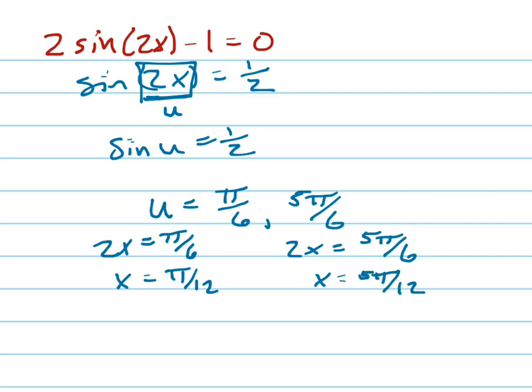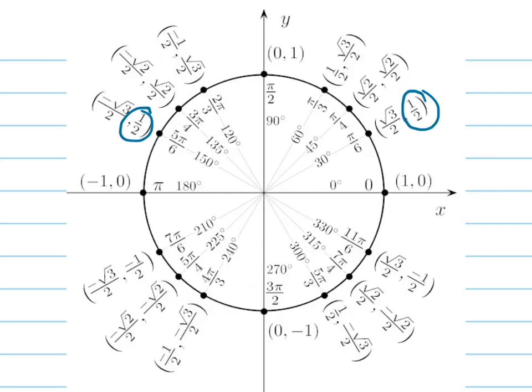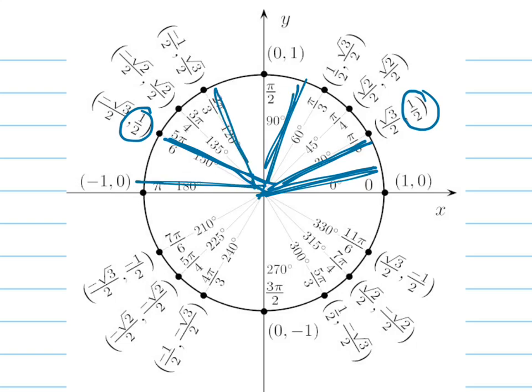But you're not done. Because notice what I did here. Pi over 12 and 5 pi over 12. Remember, these two answers, one's in the first quadrant and one's in the second quadrant. But pi over 12 is here, and 5 pi over 12 is here. Those are both in the first quadrant. There's going to be two more answers in the second quadrant that I need to find.